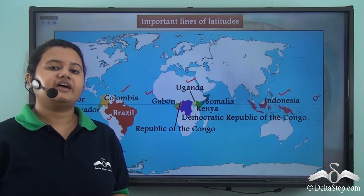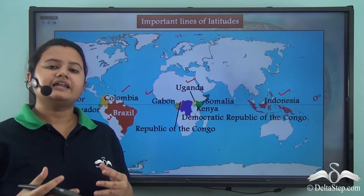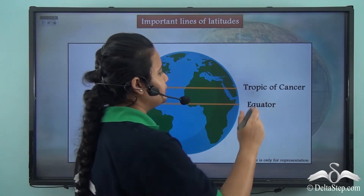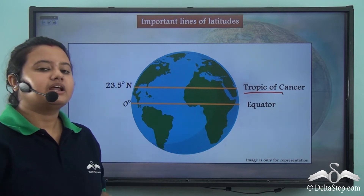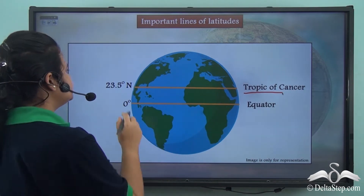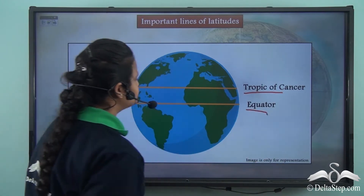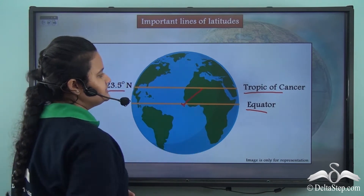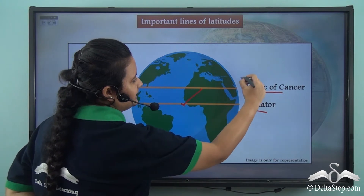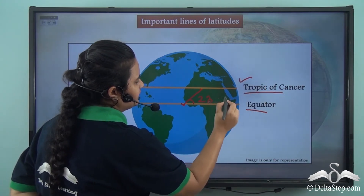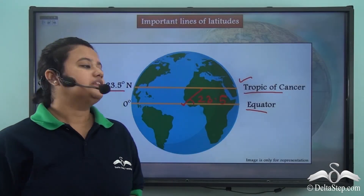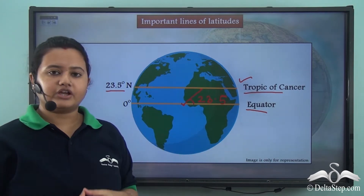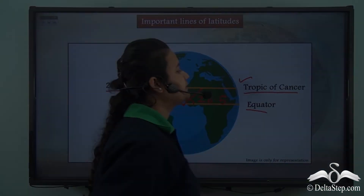Apart from the equator, there are other important lines of latitude. The next important line of latitude is the Tropic of Cancer. This latitude lies at a distance of twenty-three and a half degrees from the equator. So the angular distance between the equator and this latitude is twenty-three and a half degrees. The twenty-three and a half degree latitude that lies to the north of the equator is called the Tropic of Cancer.